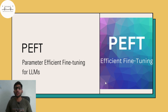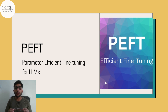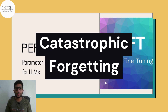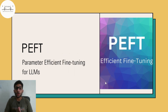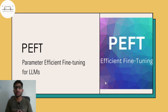Hi all. In this video we are going to discuss an efficient fine-tuning technique for large language models. Whenever we talk of large language models and fine-tuning, one of the key terms that comes across is catastrophic forgetting. Whenever we want to fine-tune a large language model with newer data, with task-specific data, we run the risk of losing some of the existing knowledge of the large language model. There is some loss of information. This is known as catastrophic forgetting.